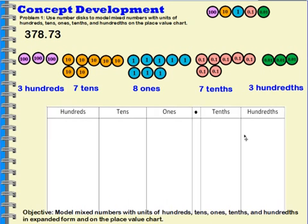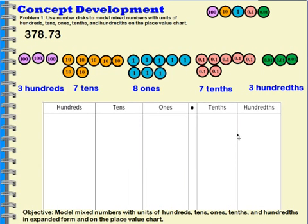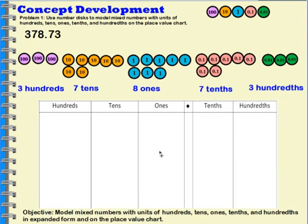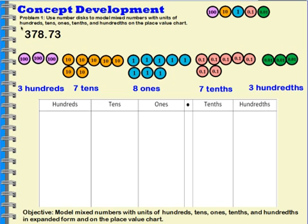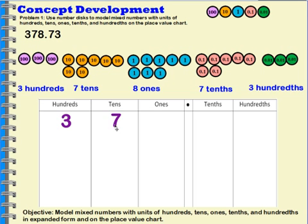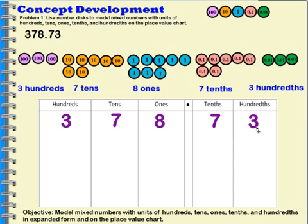Now I want to talk about them on a place value chart. So here I have a place value chart and I can put my 378 and 73 hundredths in the place value chart. I have three hundreds, I have seven tens, I have eight ones, I have seven tenths, and I have three hundredths.